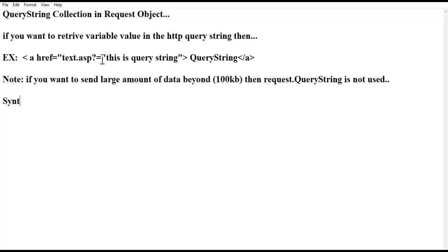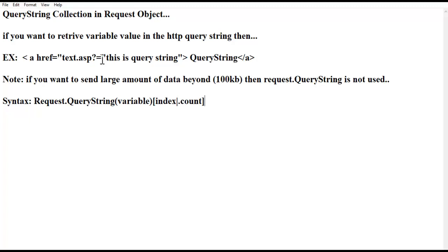So what is the syntax? The syntax is request.queryString and the particular variable name that you want to retrieve. You can also mention the index — this is optional. And the count — this is also optional. Both index and count are optional. The variable is always required because you want to return that particular variable value.